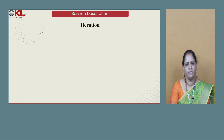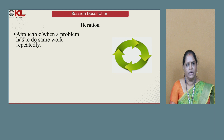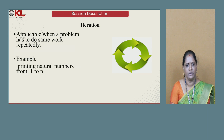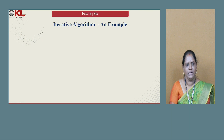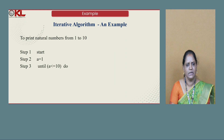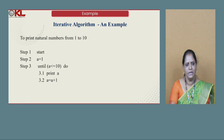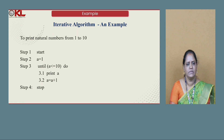The last type of algorithm is iteration. In iteration, the statements are executed repeatedly until the condition is true. This is applicable when a problem has to do some work repeatedly. Example: printing natural numbers from 1 to n. Algorithm: Step 1 — Start. Step 2 — a equals 1. Step 3 — Until a is less than or equal to 10, print a and increment a by 1. Step 4 — Stop. Once the condition is false, it exits the loop and goes to the Stop step.